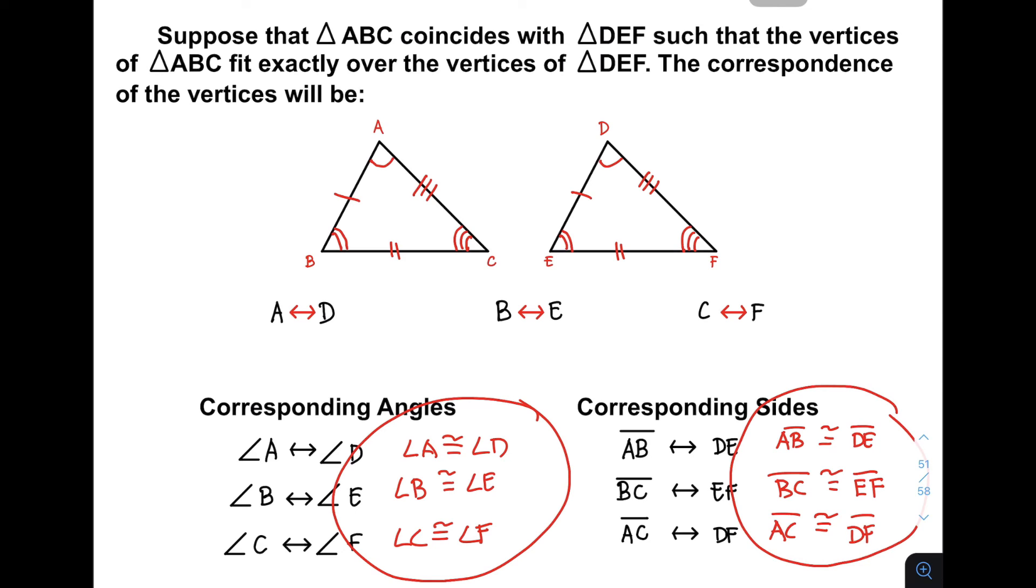If these three pairs of congruent angles and three pairs of congruent sides appear on two triangles, therefore we can conclude that triangle ABC is congruent to triangle DEF.